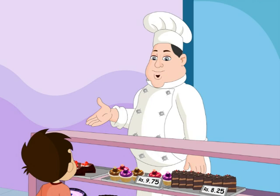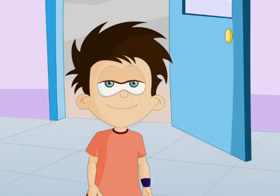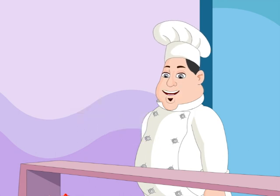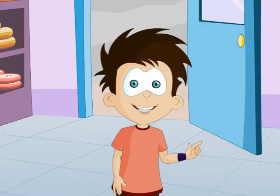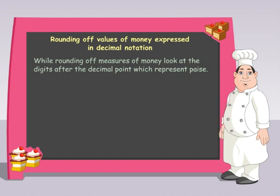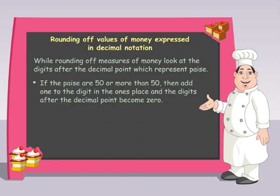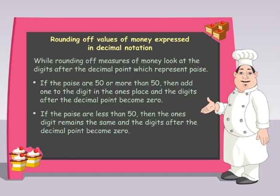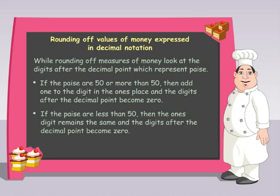Did you understand that, JC? Yes, I did! Come on, quickly round off the price of each item you want to the nearest ones and add it up. How do I do that? It's simple. While rounding off measures of money, look at the digits after the decimal point which represent paise. If the paise are 50 or more than 50, then add 1 to the digit in the ones place and the digit after the decimal point becomes 0. If the paise are less than 50, then the ones digit remains the same and the digits after the decimal point become 0.